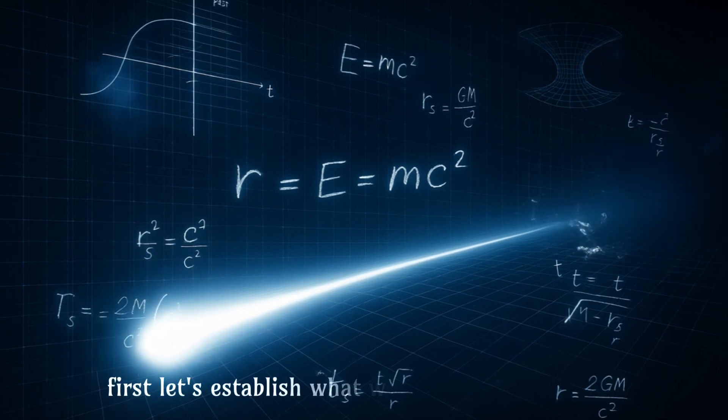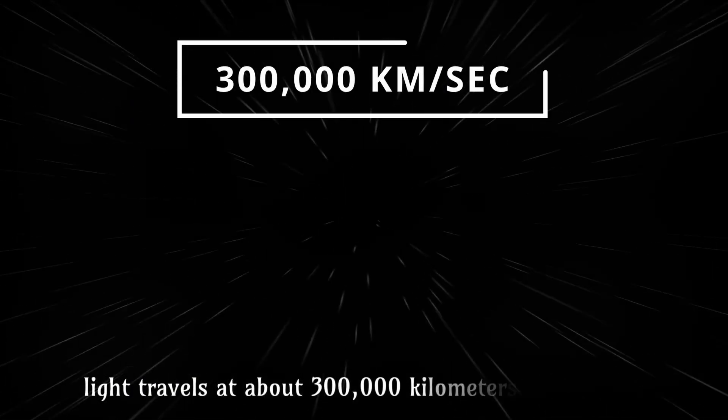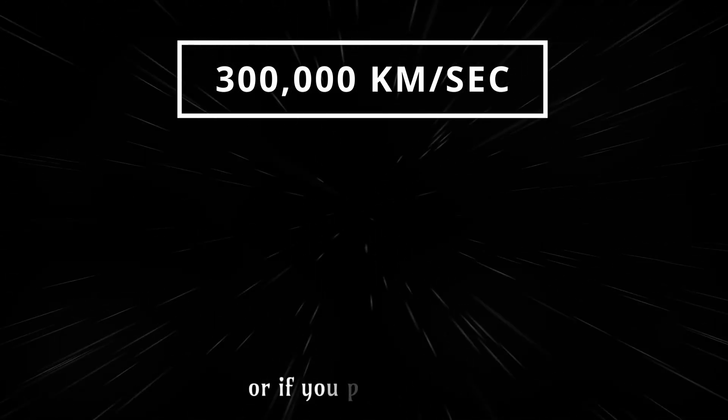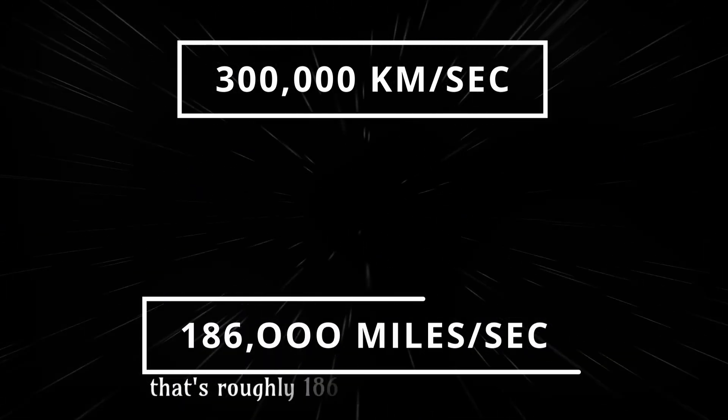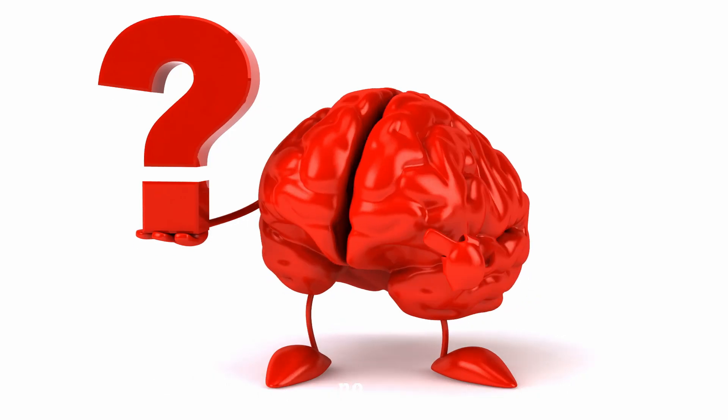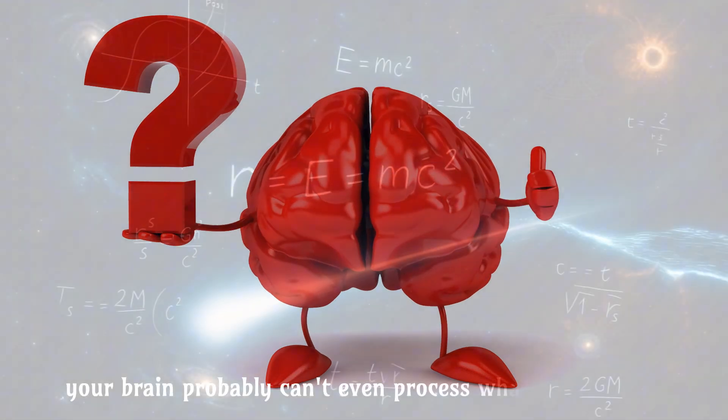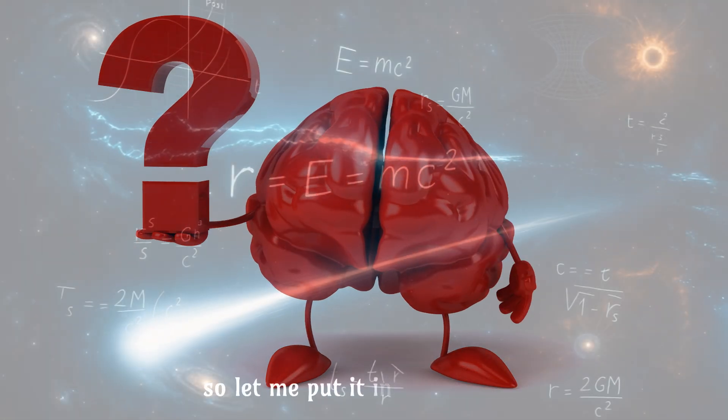First, let's establish what we're dealing with here. Light travels at about 300,000 kilometers per second. Or if you prefer miles, that's roughly 186,000 miles per second. Now, your brain probably can't even process what that means. So let me put it in perspective.